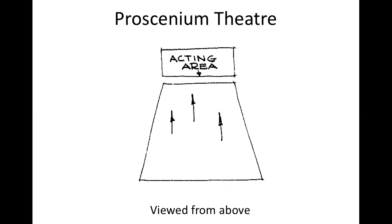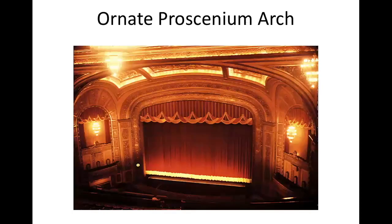The first theater explored and explained is the proscenium. As you see in this view from above, there's an acting area and the actor looks out at the audience and the audience is looking in. It's sort of like looking in on a picture frame. Many theaters, particularly the older theaters, had these gorgeous ornate proscenium arches. Gold is very popular. It's so beautiful.